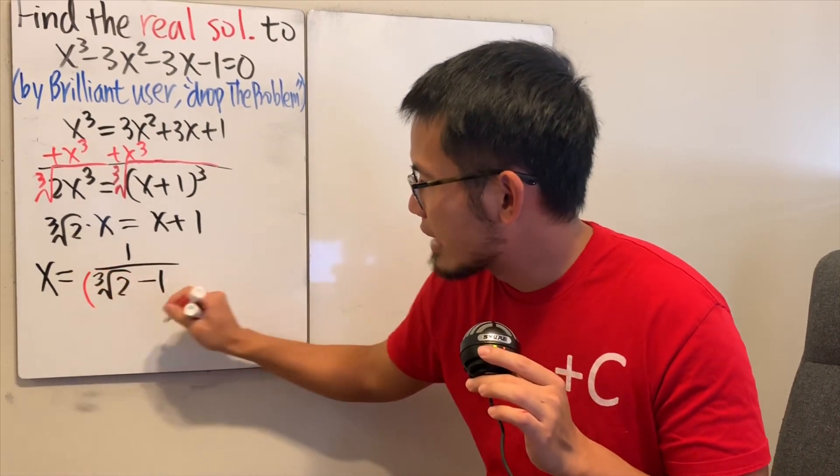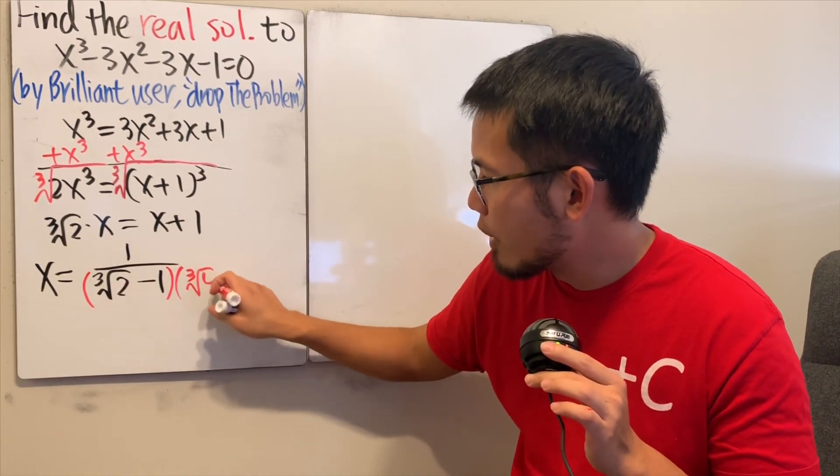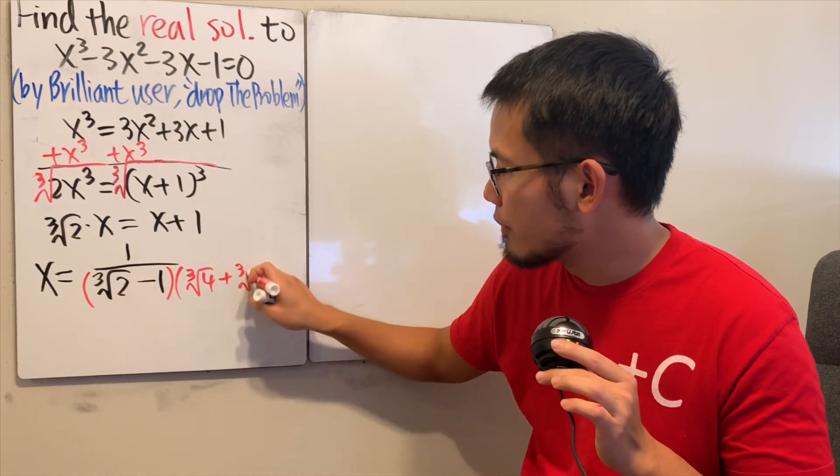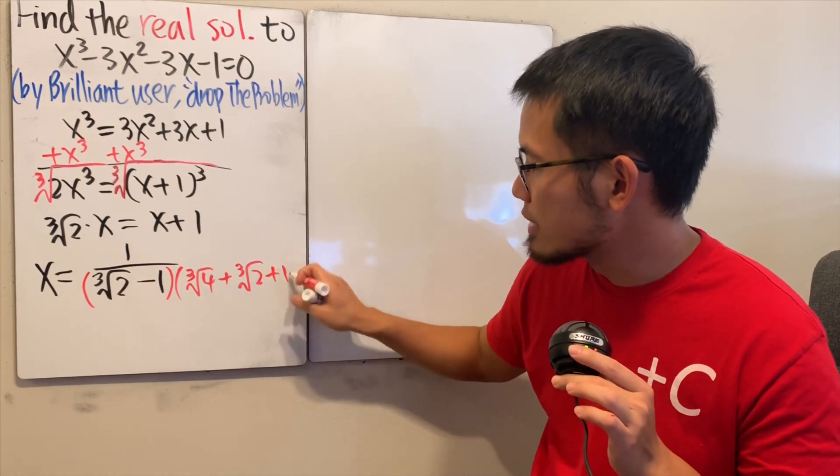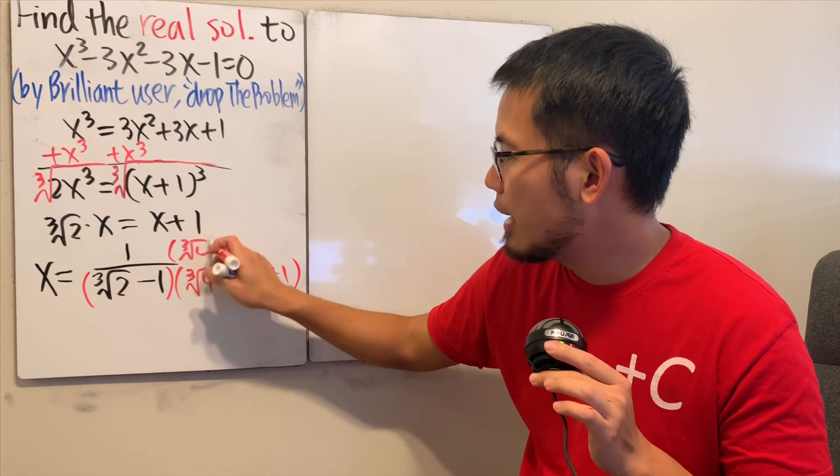What we will do is multiply the top and bottom by this square. So I'll put down ∛4. And then we add this times that, which is just ∛2. And then we have to add this square, so it's just plus 1. Of course, do the same thing on the top as well.